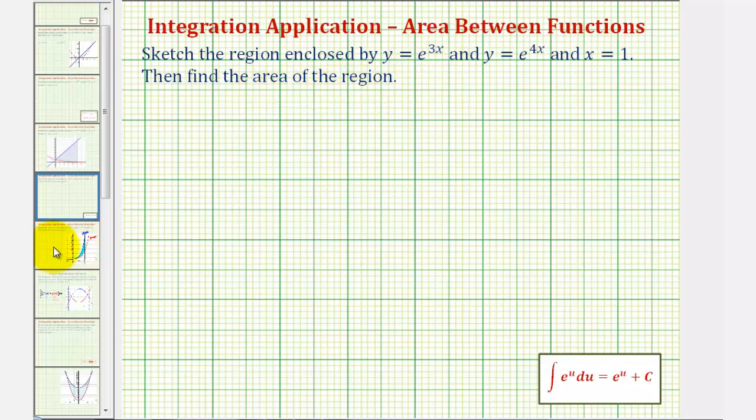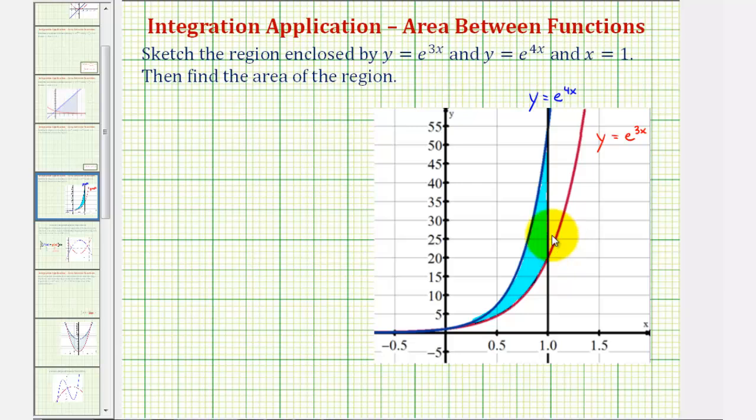So if we graph these on the coordinate plane, the graph looks like this. We should recognize that this blue function here would be e raised to the power of 4x because notice as x increases, e to the 4x increases faster than e to the 3x.